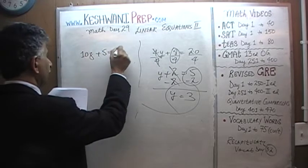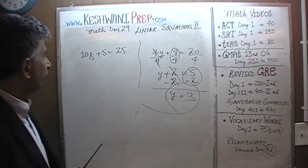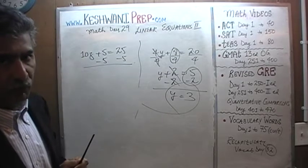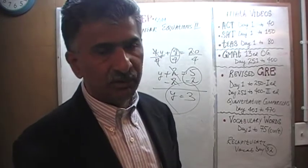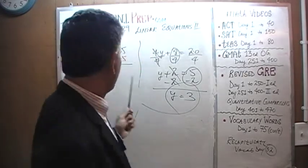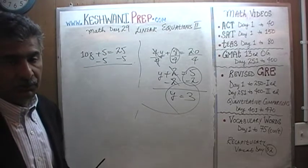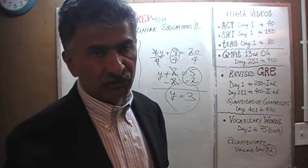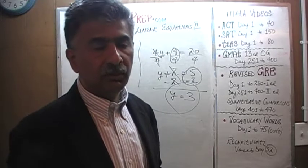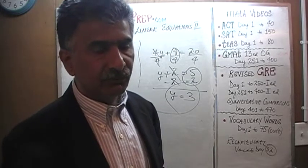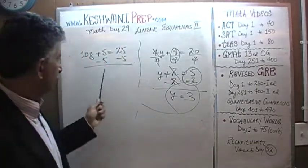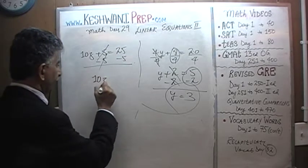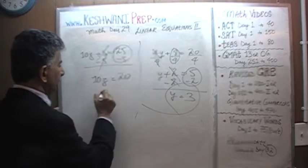10z plus 5 equals 25. Subtract 5 from both sides of the equation. You must always say the whole thing — don't just say subtract 5. Subtract 5 from where? You can't subtract or add something to only one side of the equation. If you do, that equation is no longer valid, no longer balanced. You must say subtract 5 from both sides. Positive 5 is going to cancel negative 5. 10z equals 25 minus 5 which is 20, and therefore z is equal to 2.